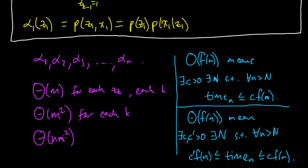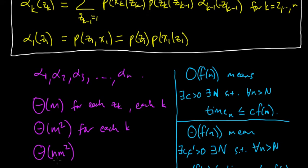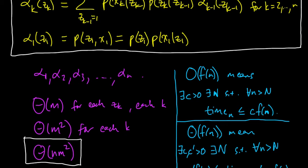So here, the time that the forward algorithm takes grows proportionally with n times m squared. And that's easy to see — it's not even asymptotically, it's actually directly. We talked about this in the previous video: for each z, you have to do a computation with m steps because the sum is over m, and there are m z's, and we have to do it n times to get all the alphas.